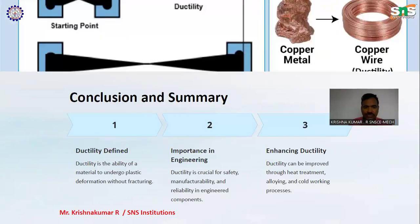Conclusion. Ductility defined: ductility is the ability of a material to undergo plastic deformation without fracturing. Importance in engineering: enhanced ductility improves safety, manufacturability, and reliability of engineering components.